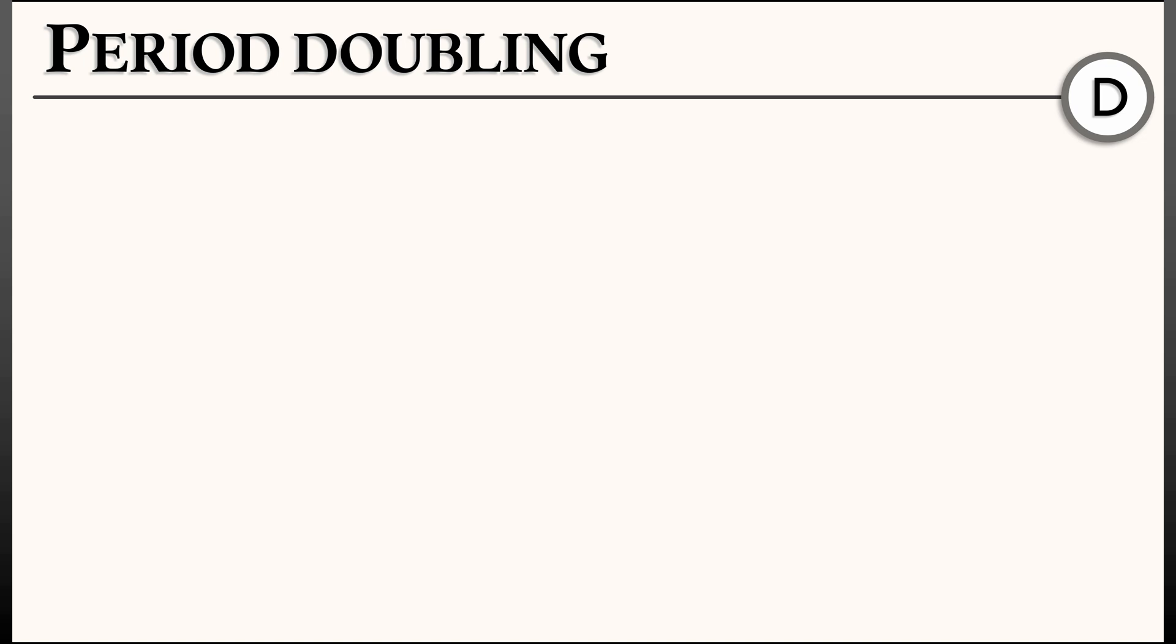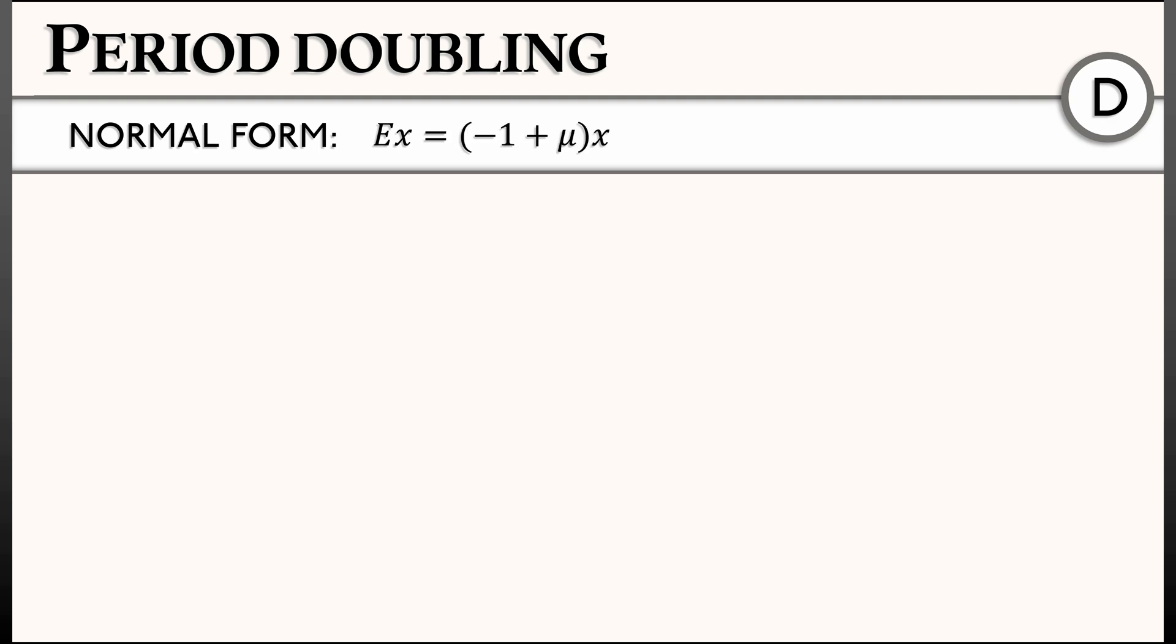It has the following normal form in discrete time only: Ex equals quantity negative one plus mu x plus c times x cubed, where c is some non-zero constant. There might be higher order terms in there as well, but we're going to forget about them.